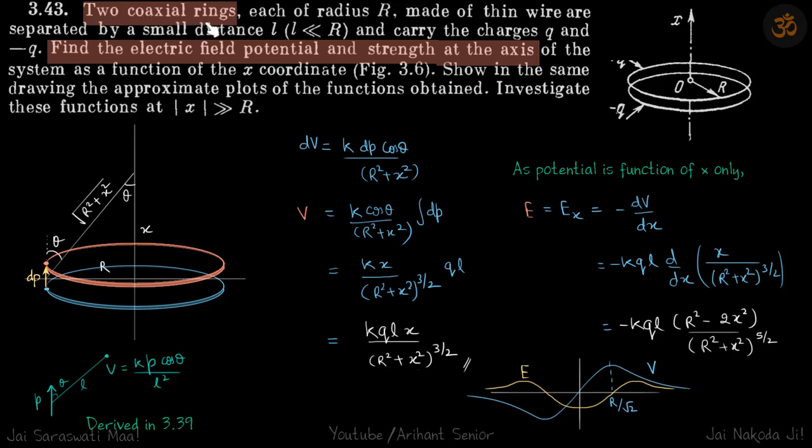We are given two coaxial rings that are separated by a small distance and they have a charge plus Q and minus Q on them. We need to find the potential and field due to these two rings on the axis.